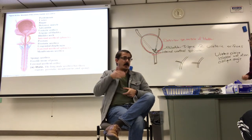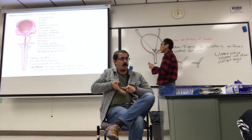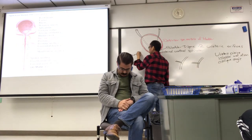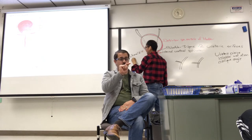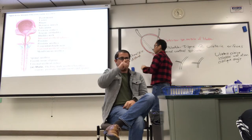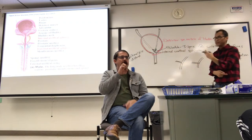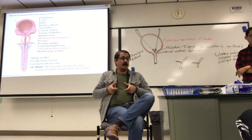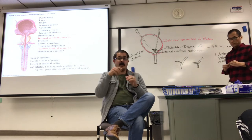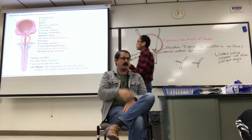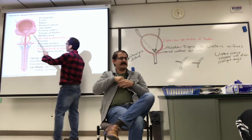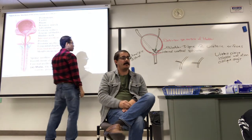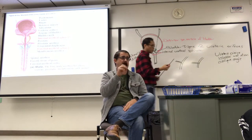The epithelial tissue lining the bladder wall is transitional epithelium, which can distend and stretch. An empty bladder will be deflated and wrinkled on the inside. The rugae is the wrinkled appearance of the mucosa on the inside of the bladder wall when it is empty. That is pretty much it for the anatomy of the urinary bladder.